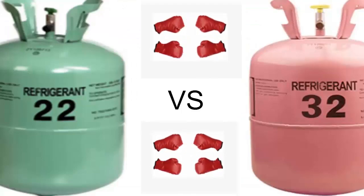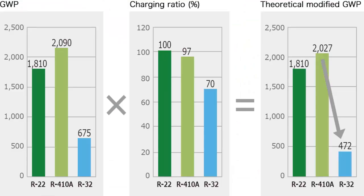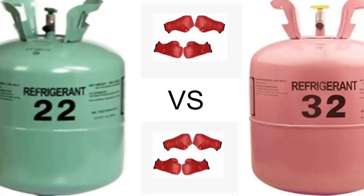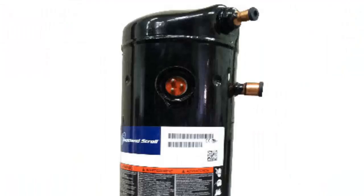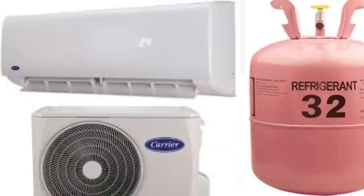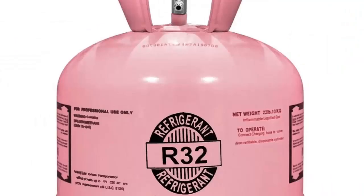The amount of R32 required for an air conditioning system is notably lower compared to R22, approximately around 60% less. Additionally, the temperature at which R32 exits the compressor is significantly higher than that of R22, which is the primary reason why R32 is used in air conditioning applications.